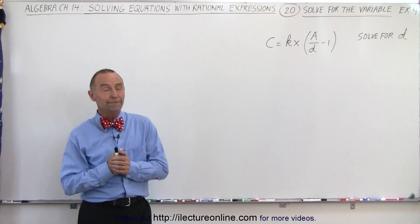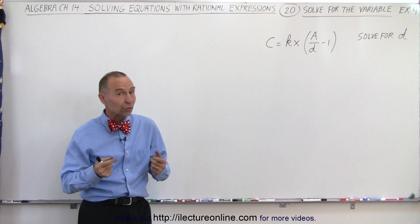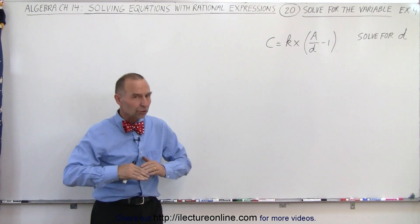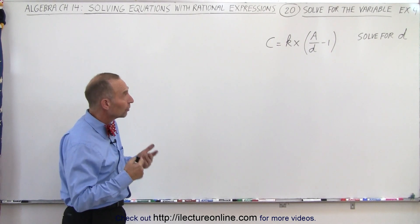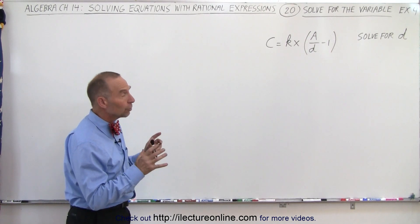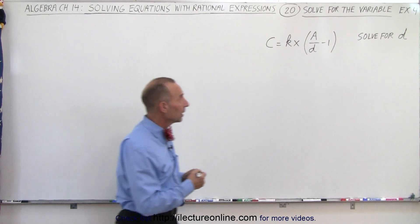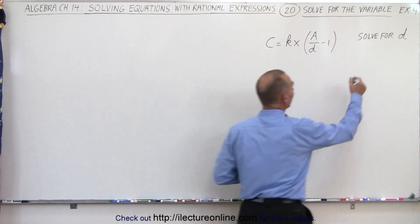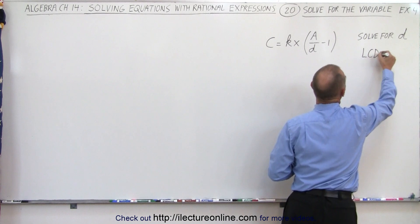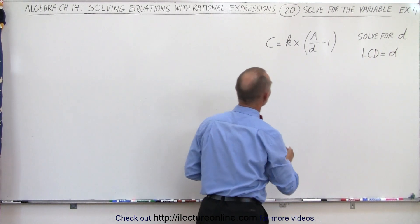Welcome to our lecture online. This example is similar to the one we did in the previous video, so we're going to use and employ the same technique by multiplying both sides of the equation by the lowest common denominator. In this case, the LCD is simply equal to D, since that's the only denominator.